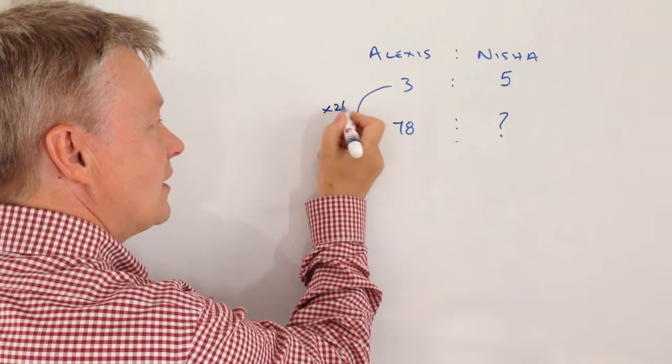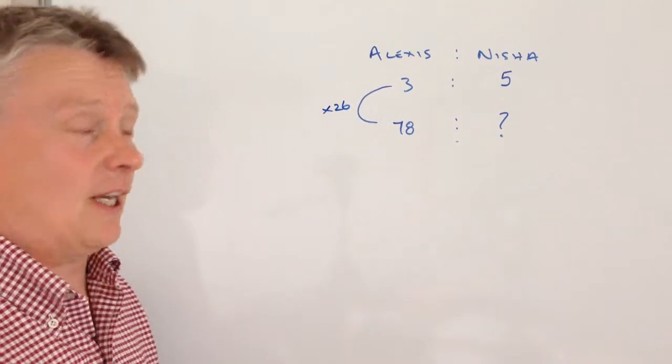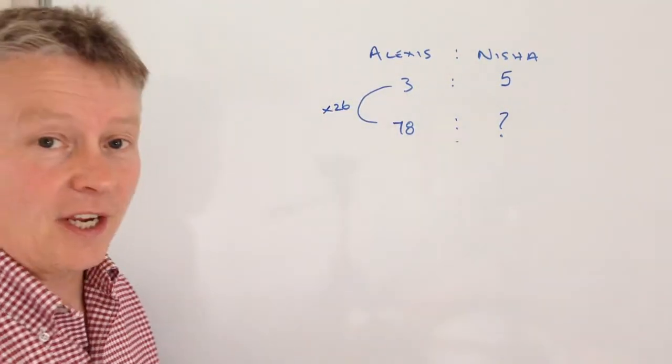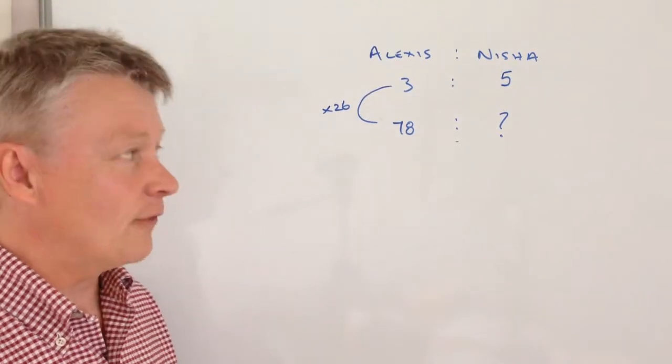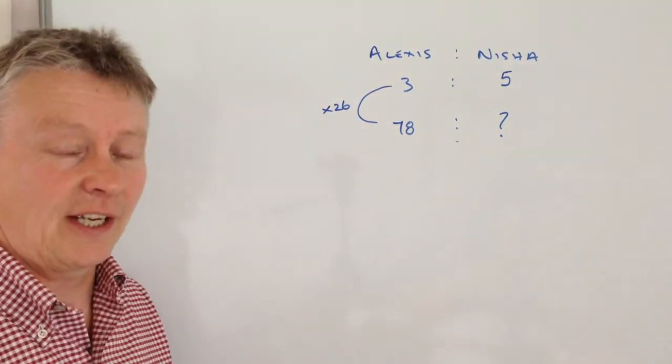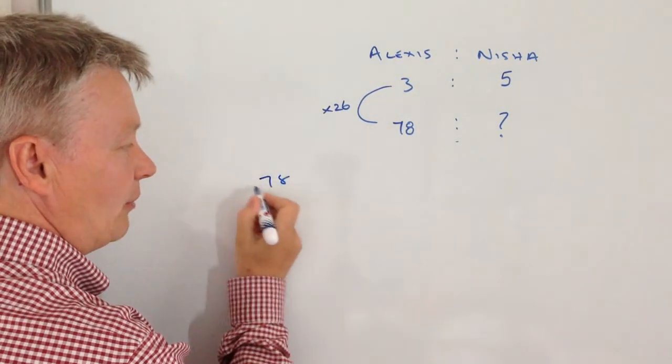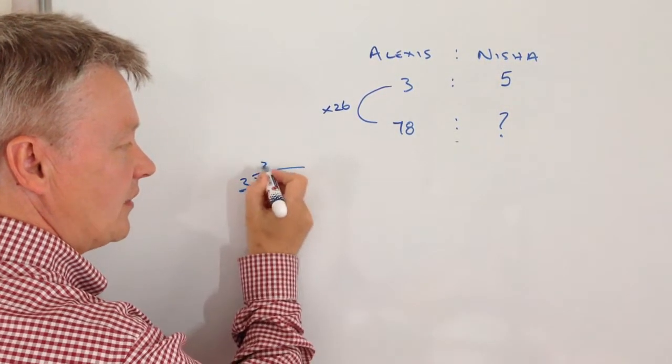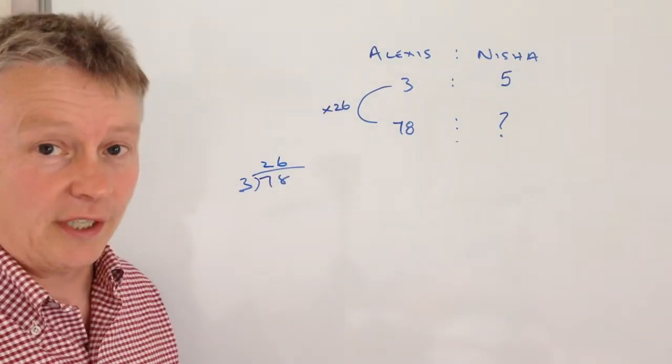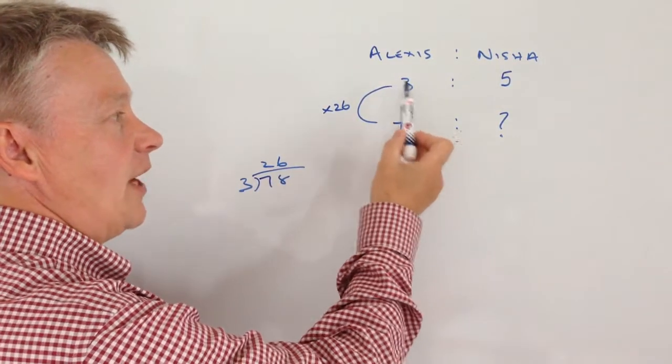Because 3 times 26 is 78. Now if you're not sure about that, generally these tend to fall into non-calculator type questions. But really all you would be doing is saying, how many 3s are there in 78? And that will work out at 26.